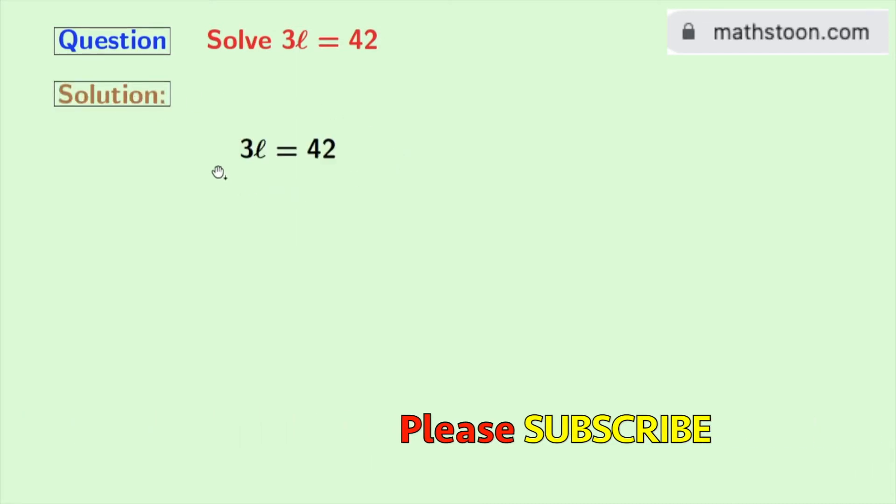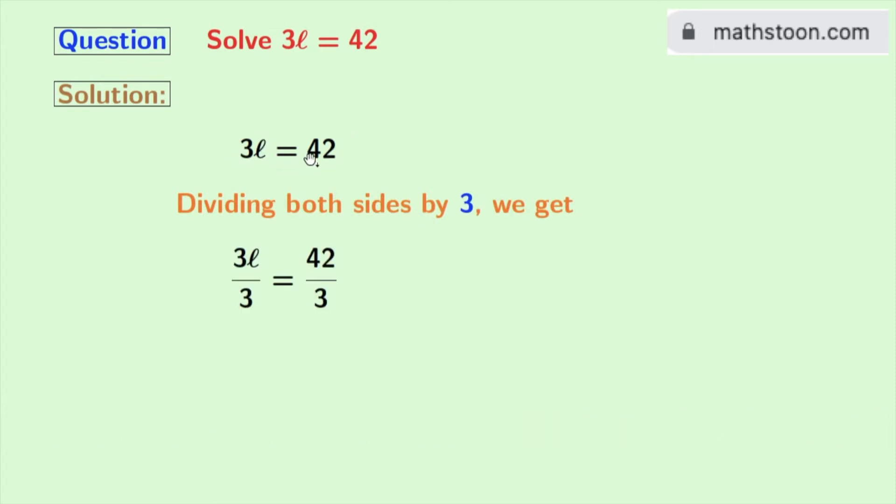This is our given equation. Look at the coefficient of L is 3. So we will divide both sides by 3. Doing that we get 3L by 3 is equal to 42 by 3.